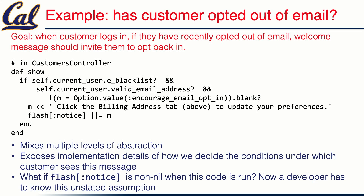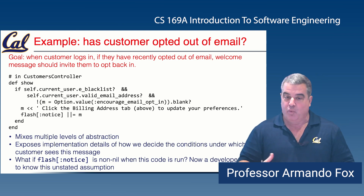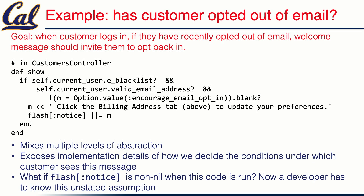First, it mixes multiple levels of abstraction — there's a bunch of detailed stuff, but also just setting the flash notice to some message. It also exposes a lot of implementation details. When the customer logs in, if they've recently opted out of email, welcome them back. But by having all this code here, we're basically exposing the implementation of what it means for someone to have recently opted out. This is an example of separating the 'what' from the 'how.' The 'what' is: has the customer recently opted out of email? The 'how' is: how do we make that decision? The controller isn't the right place for that — if there's a customer model, that's probably where the decision belongs.